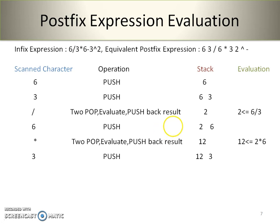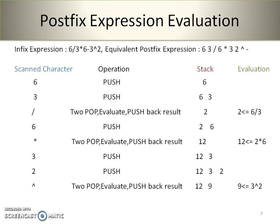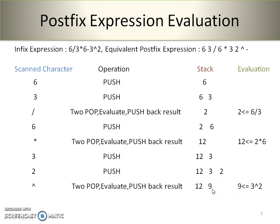The next scanned character is 3 — push it onto the stack. Next is 2 — it is an operand, so push onto the stack. The next character is the power operator. Since it is an operator, perform two consecutive pop operations: 2 is popped first and becomes the second operand, then 3 is popped and becomes the first operand. 3 to the power of 2 gives a result of 9, which we push back onto the stack.